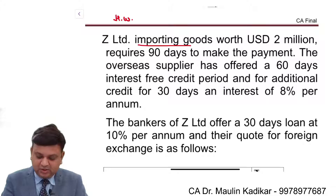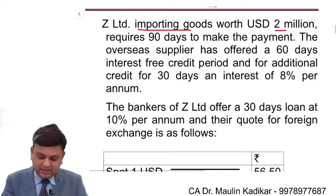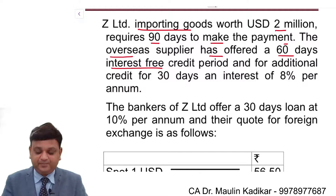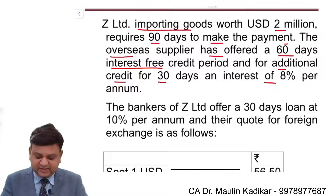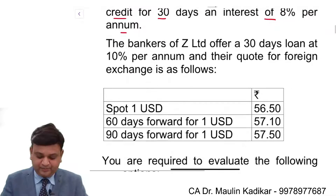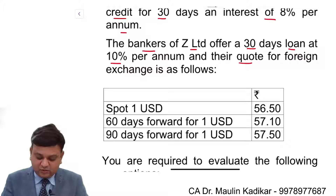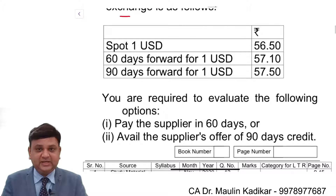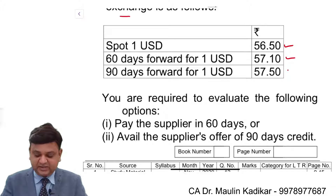Z Limited is importing goods worth $2 million, requiring 90 days to make the payment. The overseas supplier has offered 60 days interest-free credit, and for an additional credit of 30 days, interest at the rate of 8%. The banker of Z Limited offers a 30-day loan at the rate of 10%, and their quote for the foreign exchange rate is as follows: Spot is given, 60 days forward is given, and 90 days forward is given.